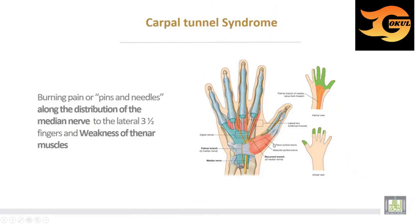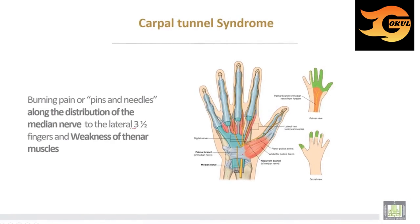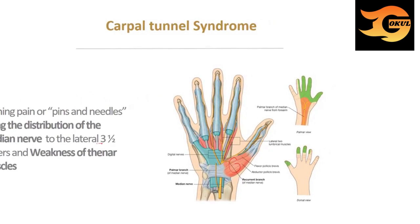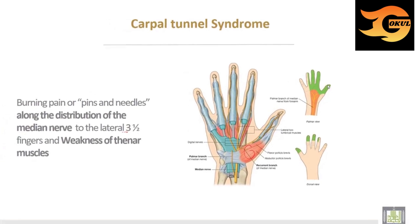Carpal tunnel syndrome brings pain or pins and needles along the distribution of the median nerve to the lateral three and a half fingers, and weakness of the thenar muscles. The lateral three and a half fingers are the affected area.